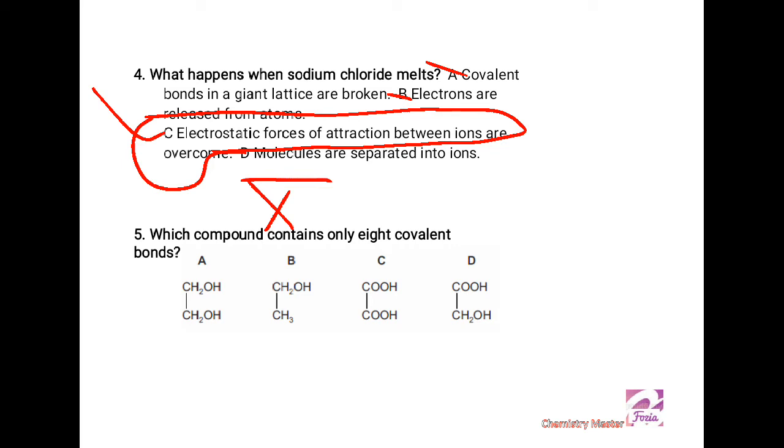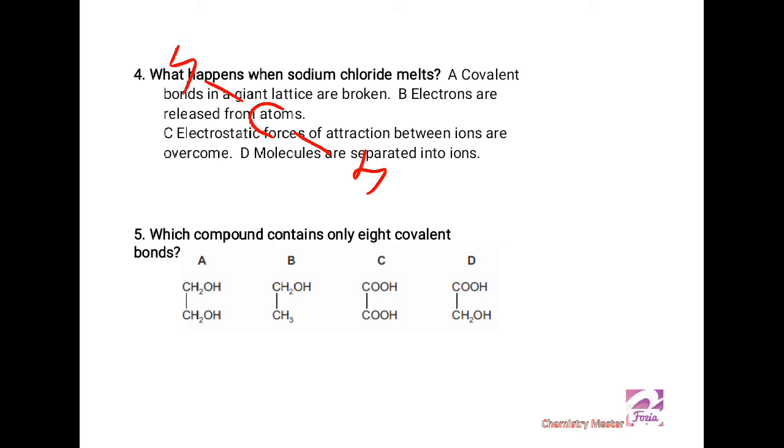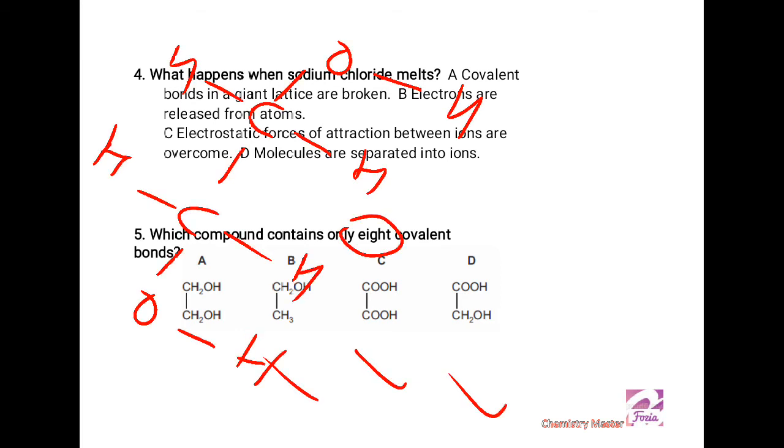For the fifth MCQ, which compounds contain only eight covalent bonds? For this you have to draw quickly the structural formula of these organic compounds. Let me help you in drawing the structure of compound A, in which carbon atom is bonded to two hydrogens and one OH, next again carbon is bonded to two hydrogens and OH. It is very easy to count the number of bonds. You quickly draw all the given options in their open forms and count the number of covalent bonds. Your right answer must have eight covalent bonds in it.